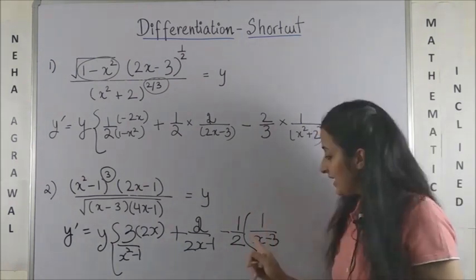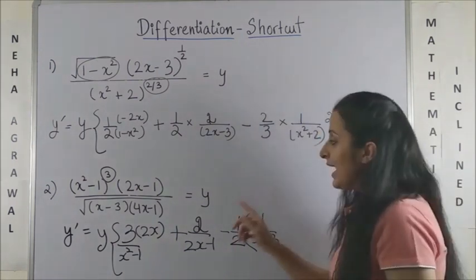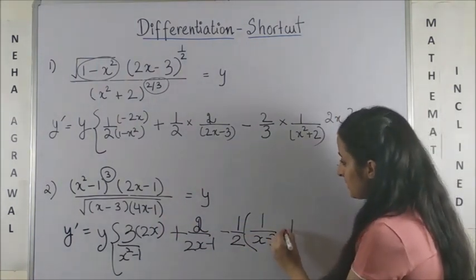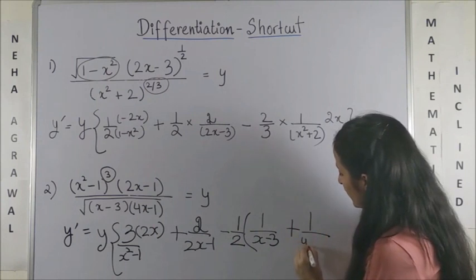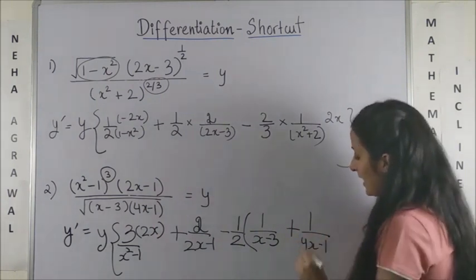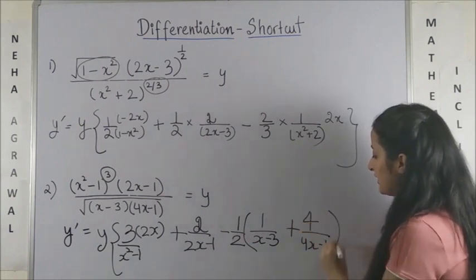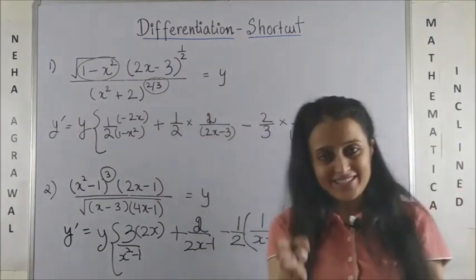And inside I would have 1/(x-3), the derivative would still be 1, and minus of this, but I am taking it common, so I can write plus 1/(4x-1), and the derivative of 4x minus 1 would be 4. That's it, that's your answer.